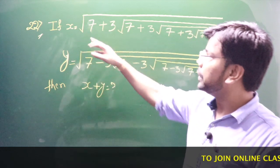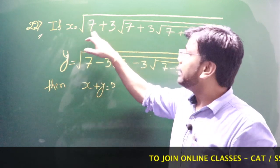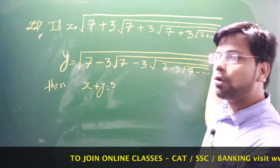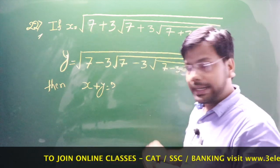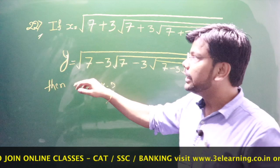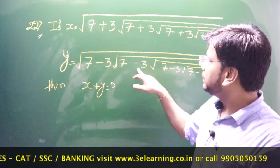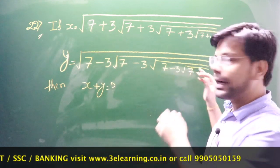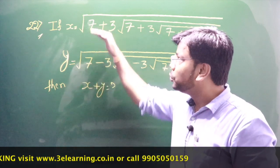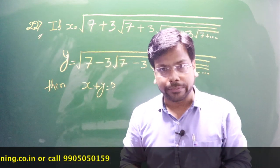You have x given, that is root 7 plus 3, root 7 plus 3, root 7, and so on up to infinite terms. The other one is y = root 7 minus 3, root 7 minus 3, and so on up to infinite terms. You are asked: if you add these two, what is the answer?